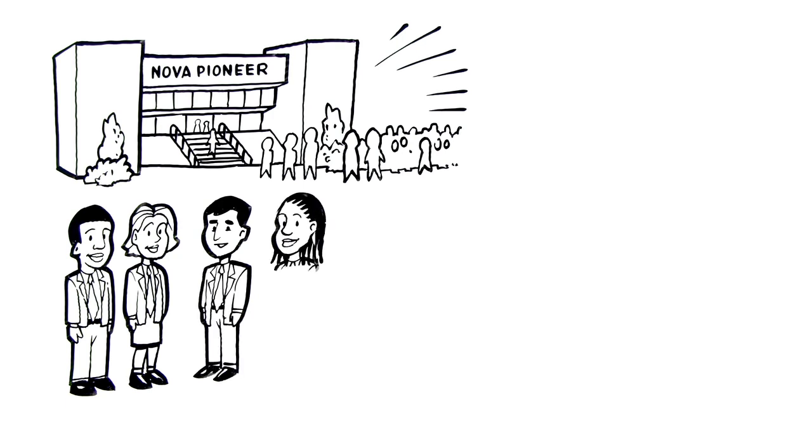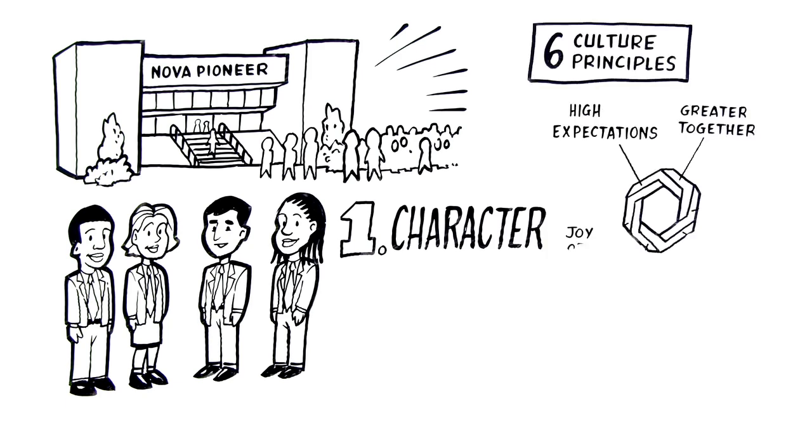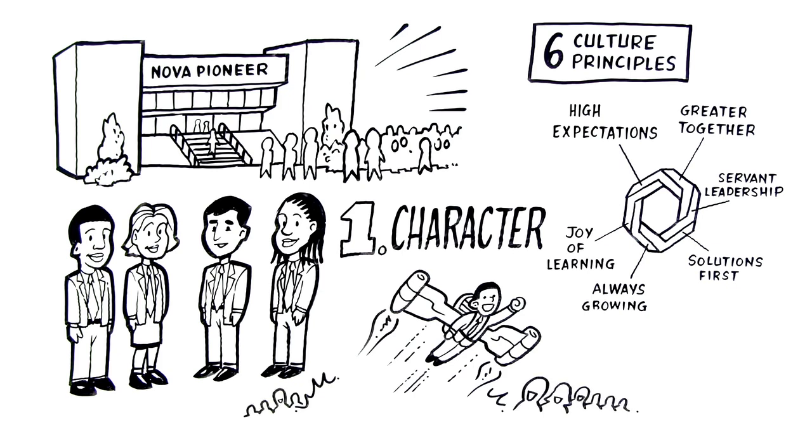Now to do that, we need to develop Noveneers in three ways. The first is character. The character of a Noveneer is defined by a set of six specific mindsets and behaviors that we call our culture principles. They challenge us to set high expectations, grow from every challenge, and seek to serve.